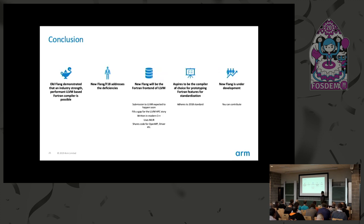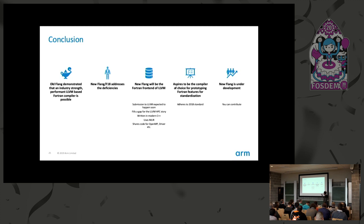In conclusion: old Flang demonstrated that an industry-strength, high-performance, LLVM-based Fortran compiler is possible. New Flang (F18) addresses the deficiencies of the old compiler and has been accepted as the Fortran frontend of LLVM — submission is expected soon. It fills a key gap in the LLVM HPC story, is written in modern C++17, uses MLIR, shares code with LLVM in OpenMP and the driver, follows standards closely, and aspires to be a platform for prototyping new Fortran standard features. It's under active development and welcomes contributions.